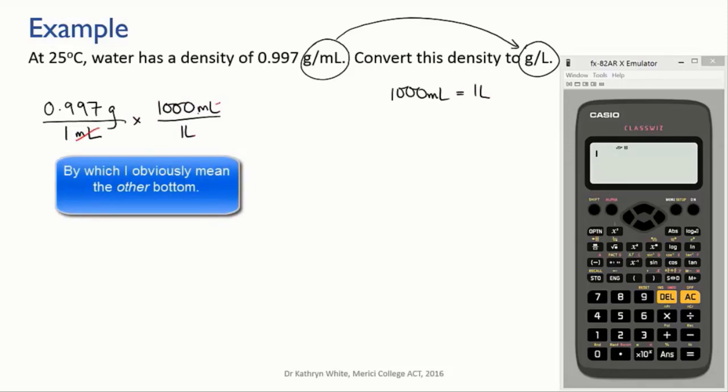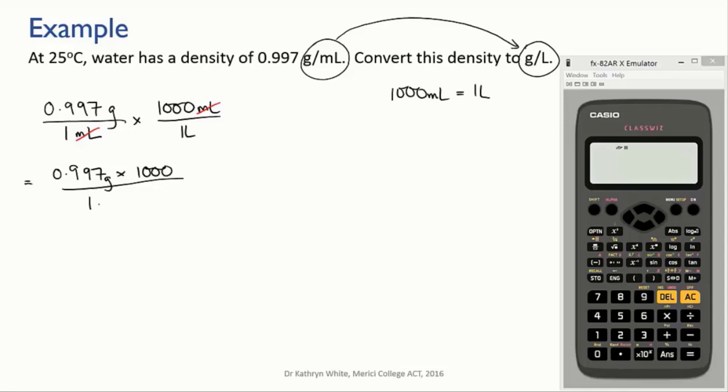Now we cancel our units and complete the calculation, and we get that the density is 997 grams per liter.